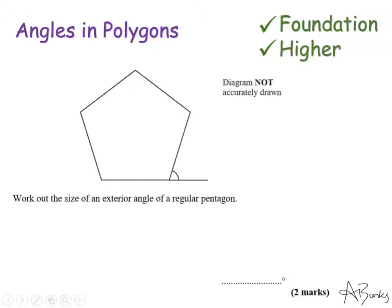Hello everyone and welcome to my online lesson on angles in polygons. I'm going to cover a few of the basic skills you need to know first before we look at solving some problems. The first skill is how to find the exterior angle of a regular polygon. Looking at this pentagon, the exterior angle is not the larger angle many people assume — it's the turn you have to make when traveling along one edge in order to reach the next edge.